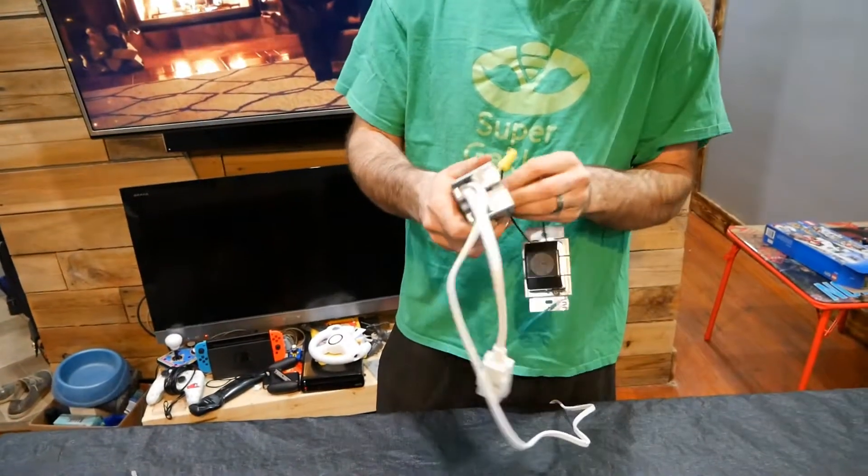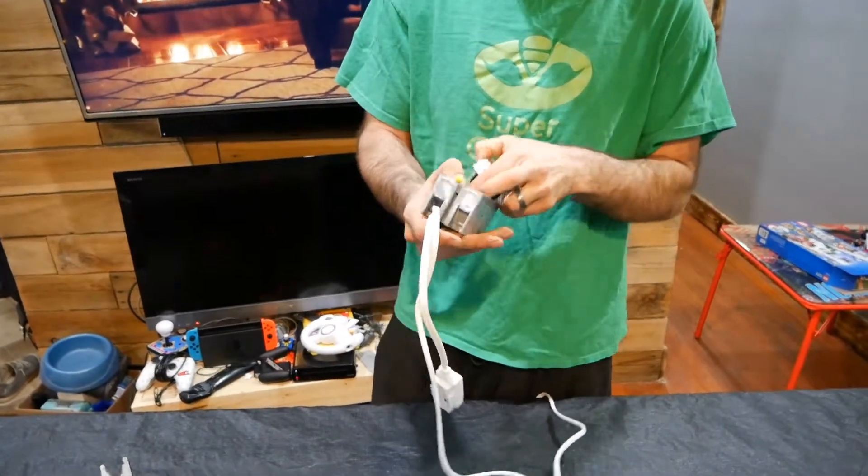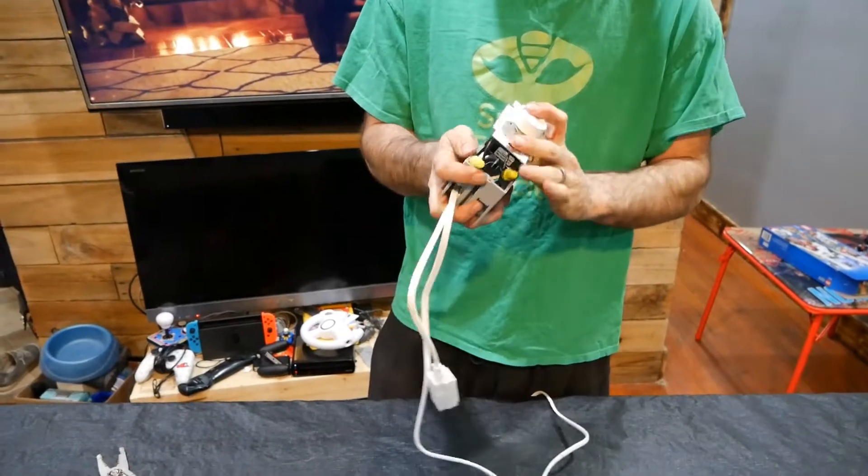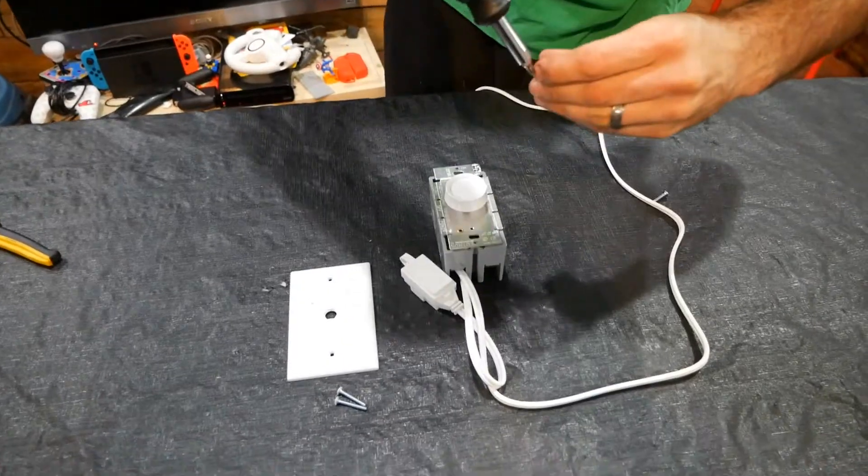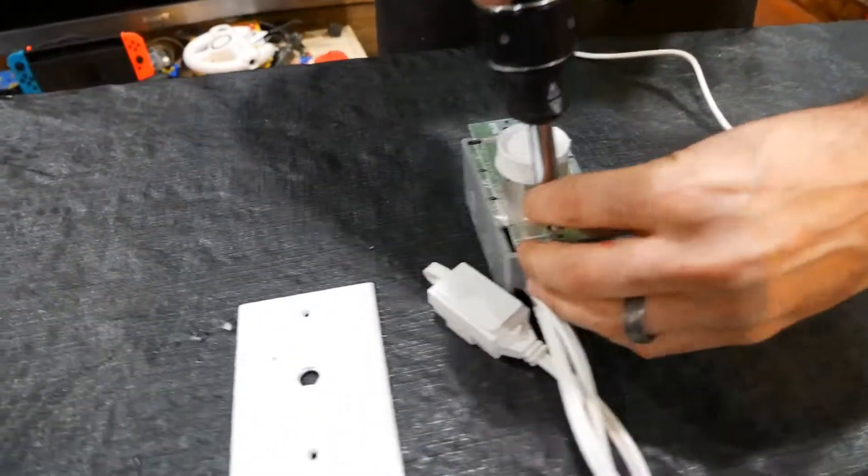We're going to pull our wires back through the box. We're going to screw our dimmer switch in here.